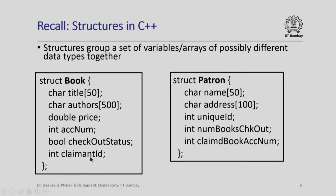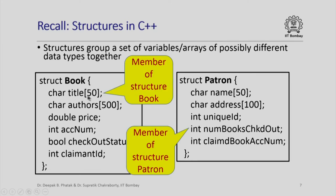The book structure also stored the accession number, checkout status, and the ID of any claimant. Similarly, the patron structure had the name of the patron, the address of the patron, the patron's unique ID, the count of the number of books checked out, and the accession number of any book that might have been claimed. These individual information items stored in a structure are called members — for example, title is a member of book, and numbooks_checked_out is a member of patron.